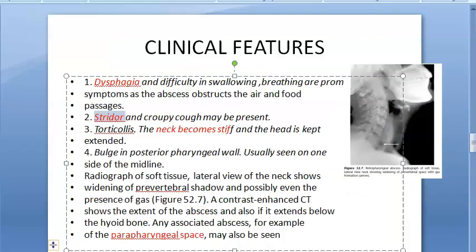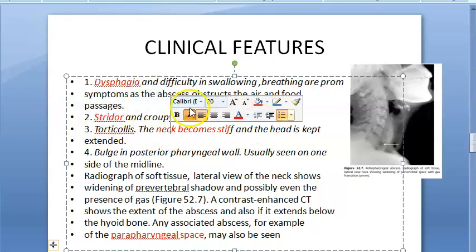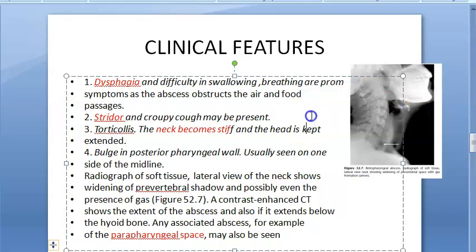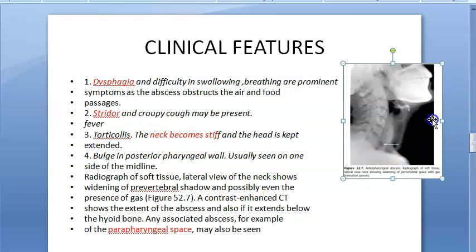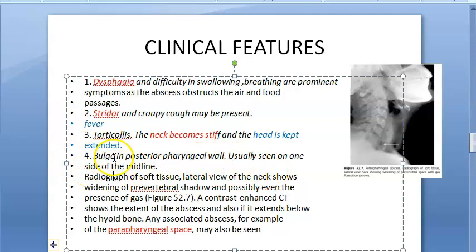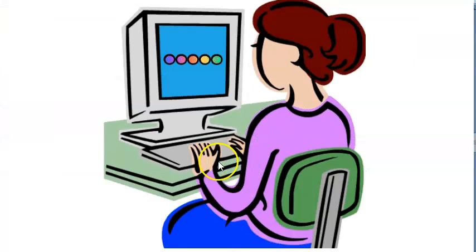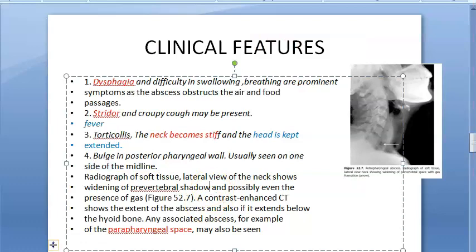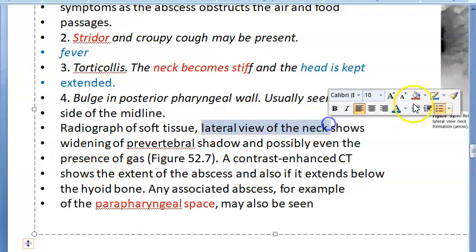These patients will have fever since it is an infection. There is torticollis — the neck becomes stiff and the head is kept extended, not flexed. There is a bulge in the posterior pharyngeal wall, usually seen on one side of the midline, making it predominantly a unilateral condition.